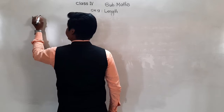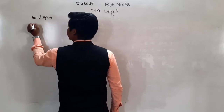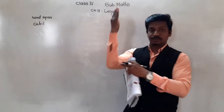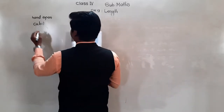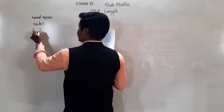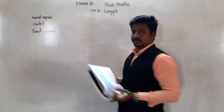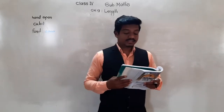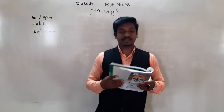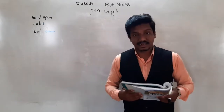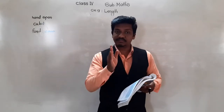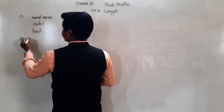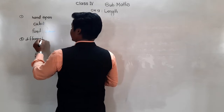Some commonly used non-standard units of length are: hand span, cubit — which is the distance from the middle finger to the elbow — and foot span. Such measures are not accurate because these lengths are different for different people.